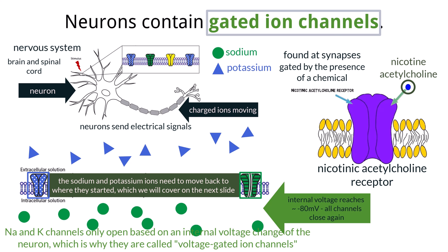If either of these chemicals bind to the protein receptor, it changes conformation and opens up, allowing ions like sodium to pass through via facilitated diffusion across the cell membrane. The influx of this sodium will subsequently increase the internal voltage, which can impact the other gated ion channels discussed earlier. The binding of these chemicals to the receptor is reversible, and when it detaches, the channel changes conformation to close.